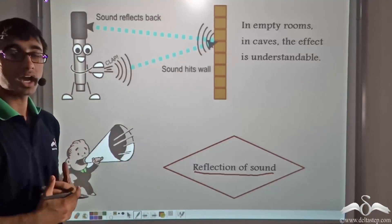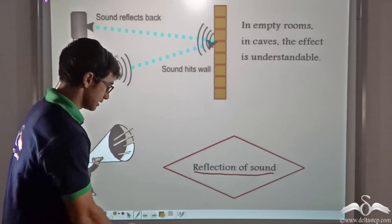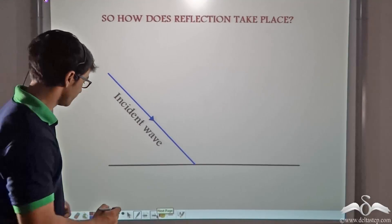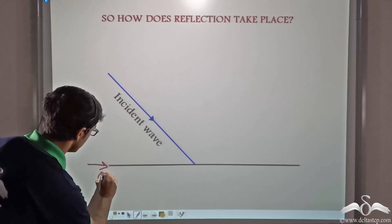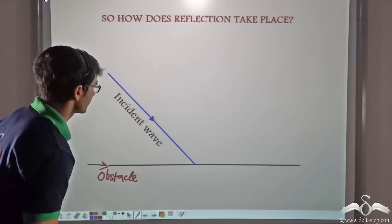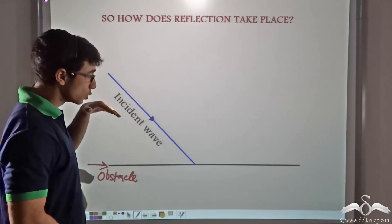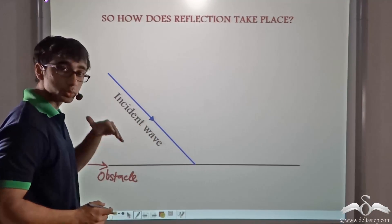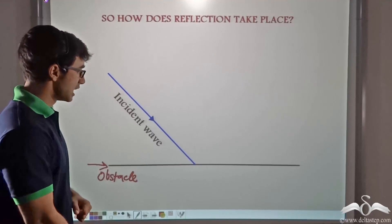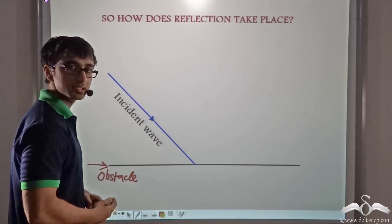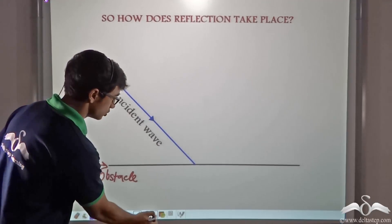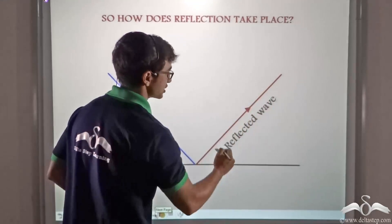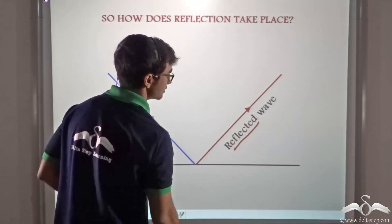Let us talk about how reflection of sound takes place. Consider a sound wave travelling towards an obstacle. Consider a sound wave that is travelling towards the obstacle as shown by the arrow on the wave. This sound wave that is travelling towards the obstacle is known as the incident wave. Now after the incident wave hits the obstacle, it will bounce back. This wave bounces back and keeps travelling in the opposite direction. This wave is known as the reflected wave.